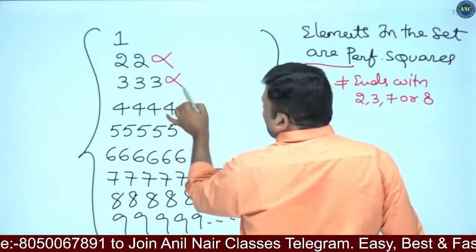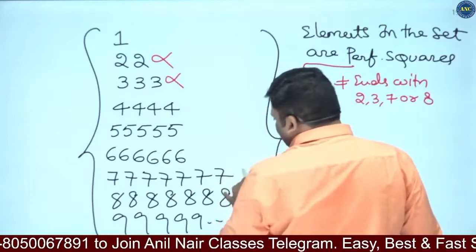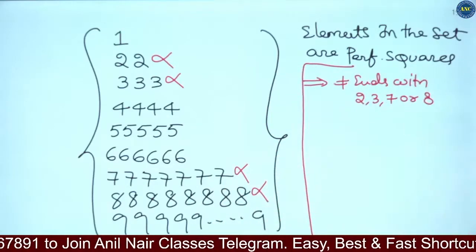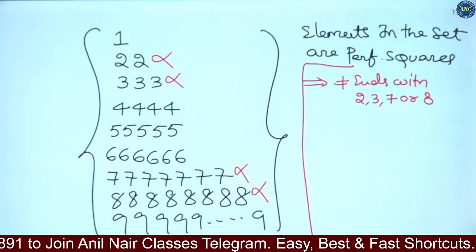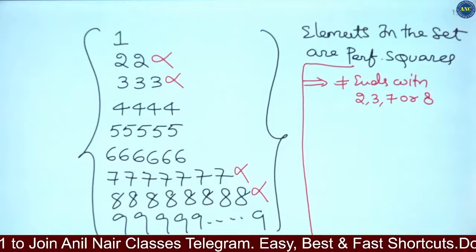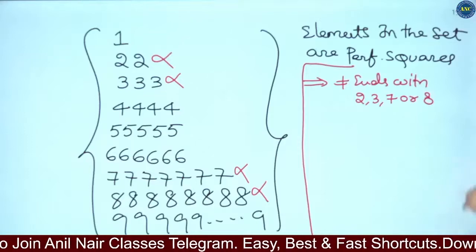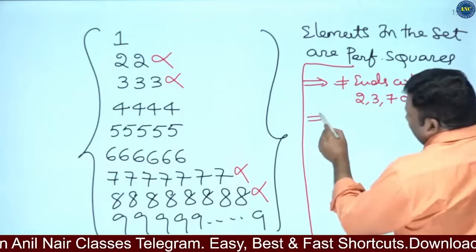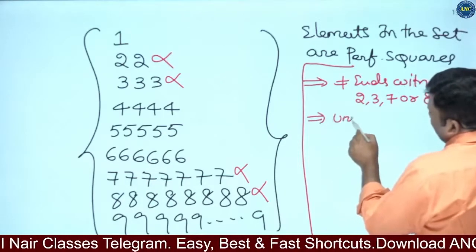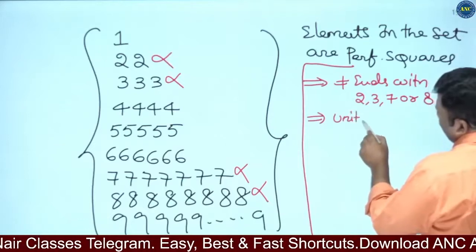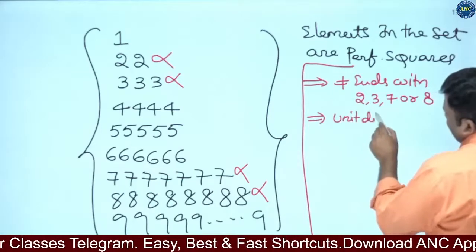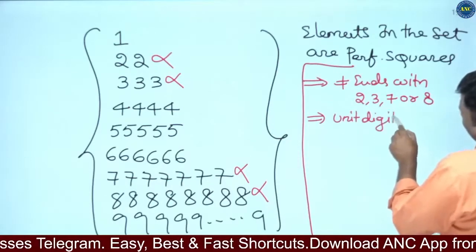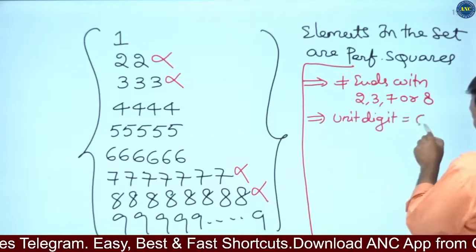So elements ending with 2 (22), 3 (333), 7 (7777777), and 8 (88888888) are all out. Perfect square never ends with 2, 3, 7, or 8.